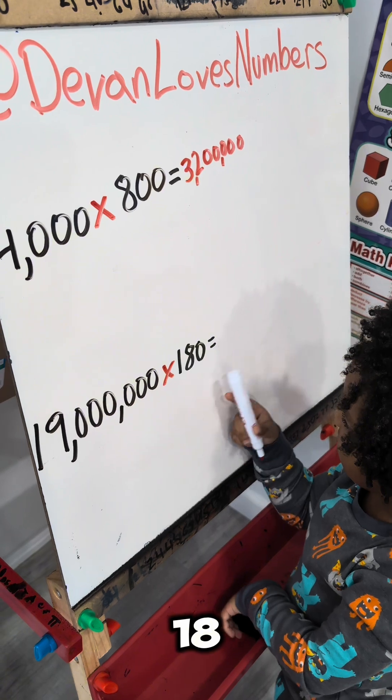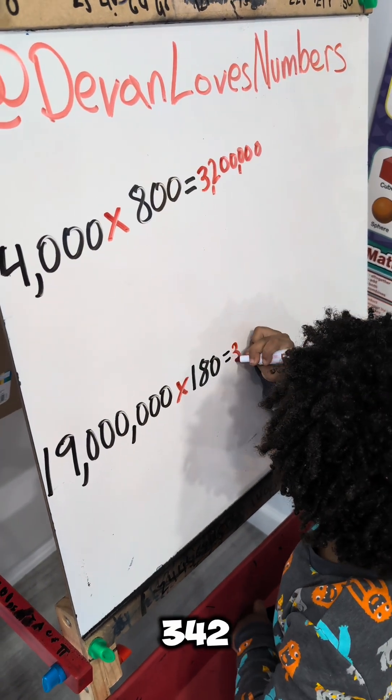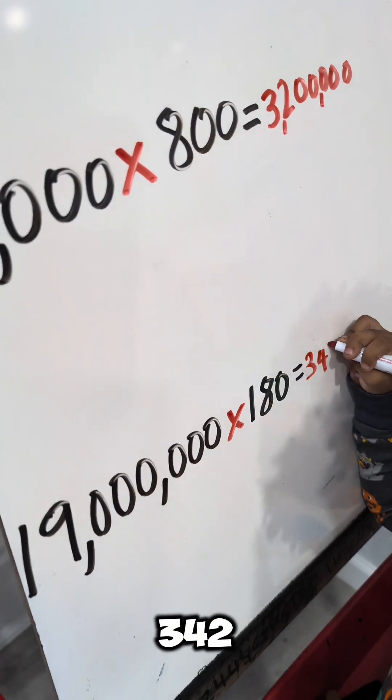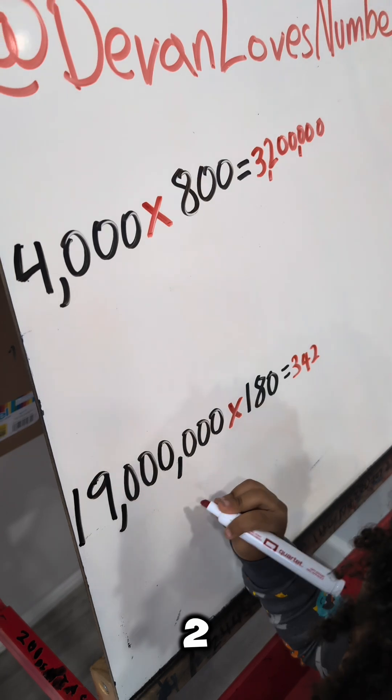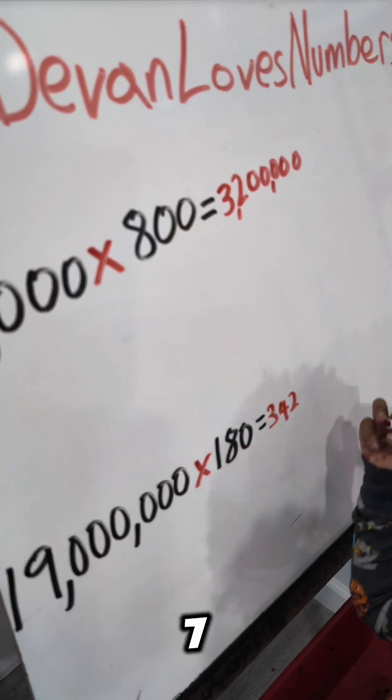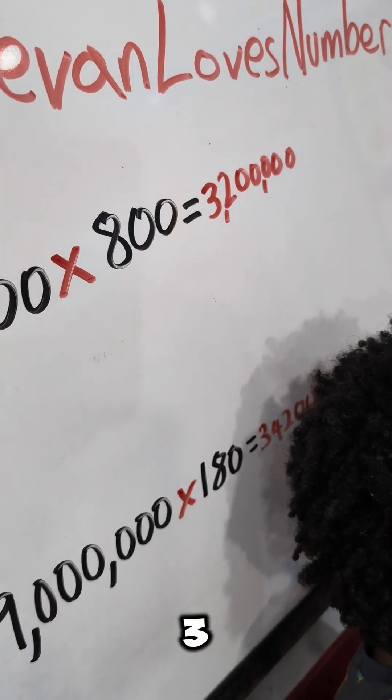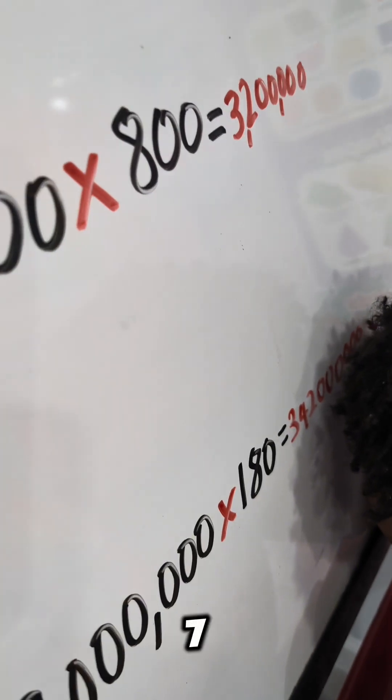Nineteen and eighteen is three hundred and forty-two. One, two, three, four, five, six, seven. One, two, three, four, five, six, seven.